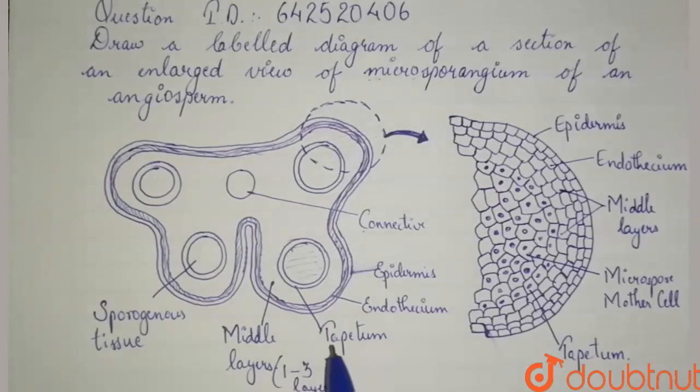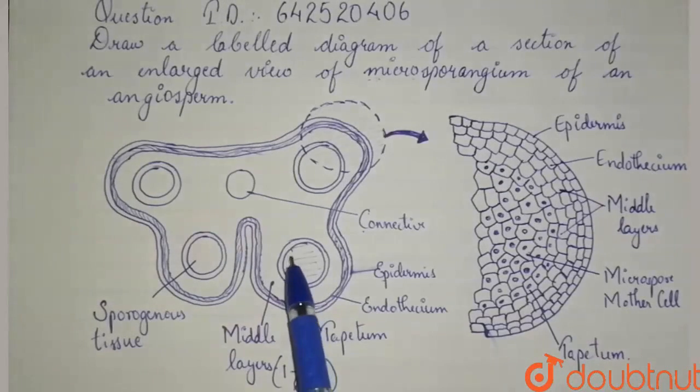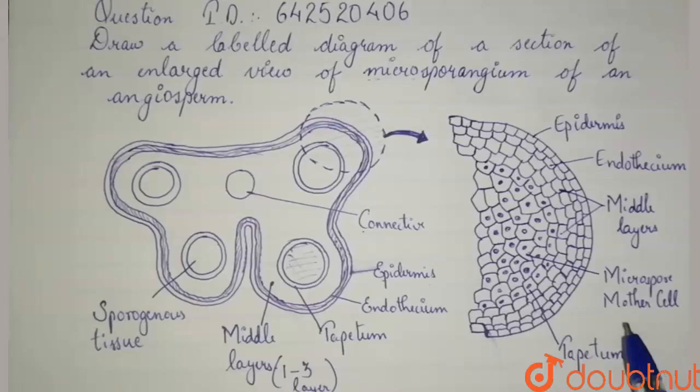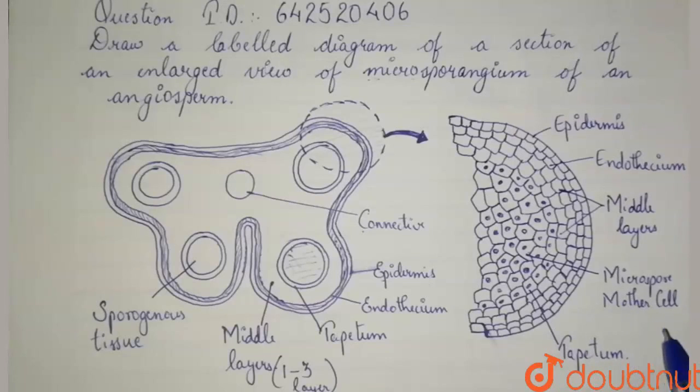When the anther is young, inside the tapetum is present the sporogenous tissue. The sporogenous tissue differentiates into the pollen or the microspore mother cells as the anther grows. As the anther grows, the microspore mother cells further differentiate and undergo meiosis. As the microspore mother cell undergoes meiosis, each microspore mother cell gives rise to a microspore tetrad, which gives rise to the pollen grains.